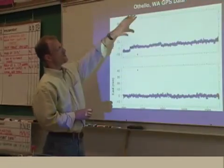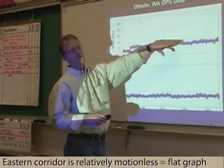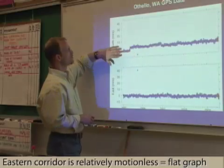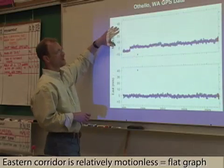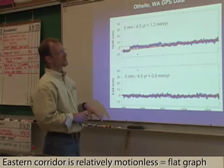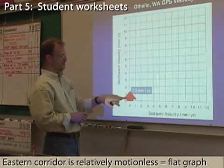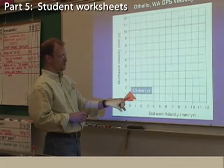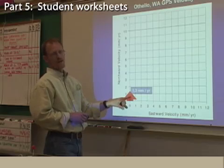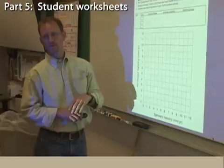So this is Othello, Washington, which is eastern Washington. That GPS time series plot is showing relatively no movement in the north/south direction, nor the east/west direction. What you end up with is just a very, very small amount of movement north. And that creates this picture of the locked and loading.